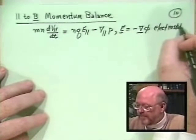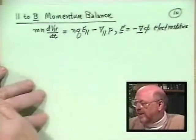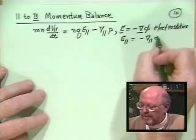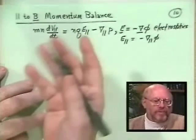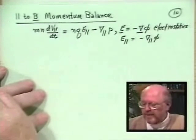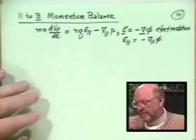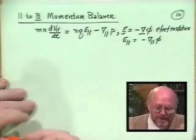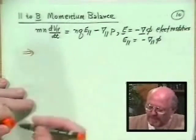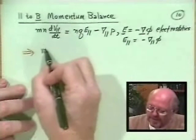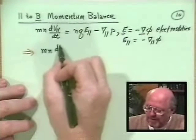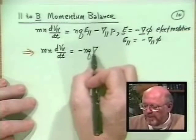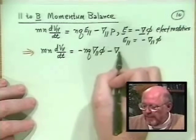If we assume electrostatics, then E_parallel equals minus grad_parallel phi, where grad_parallel is just a derivative in the Z direction for a Z-directed magnetic field. With that, our momentum balance equation becomes: MN dV_parallel/dt equals minus NQ del_parallel phi minus del_parallel P.